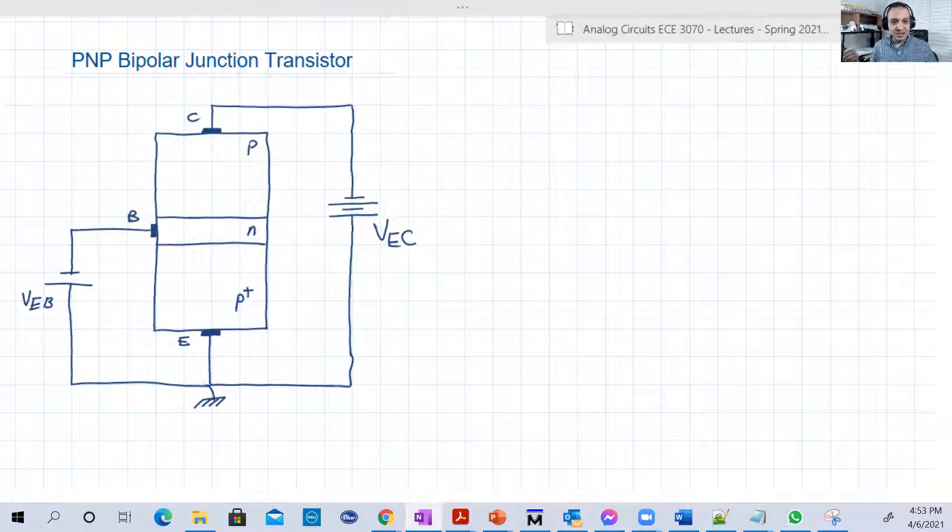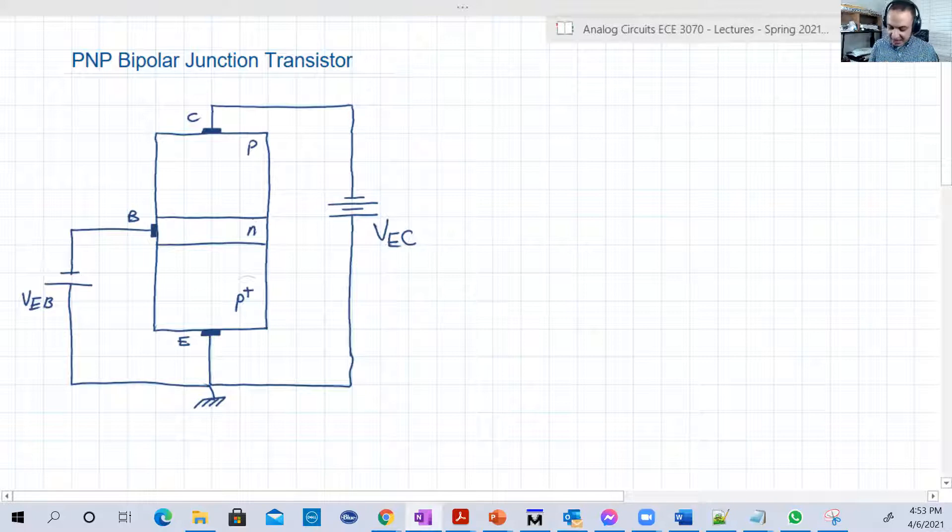So basically it's a transistor, it's also bi-junction, there are two junctions J1 and J2, just like the NPN. But now they are flipped. What was N becomes P, what was P becomes N. So basically the emitter is P type, the base is N type, and the collector is P type. So it's P, N, P.